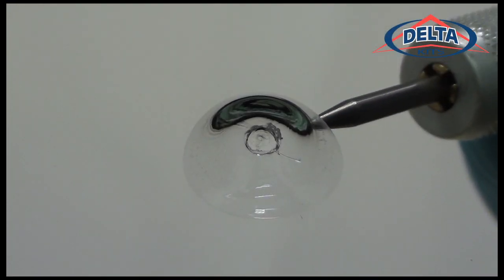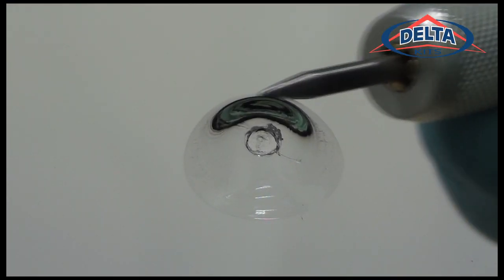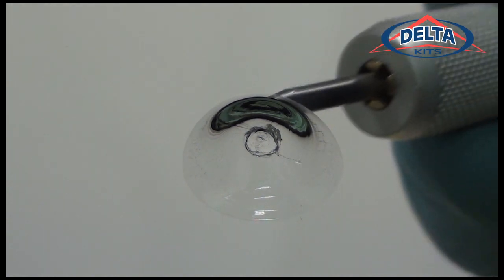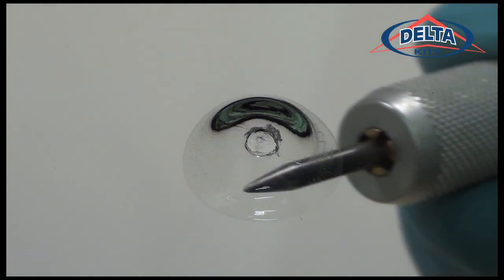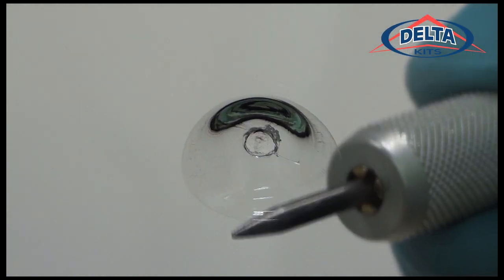Once again, probe with your scribe to ensure all of the moisture has been removed. Now there is no moisture remaining in the break and the damage is ready to be filled with resin.